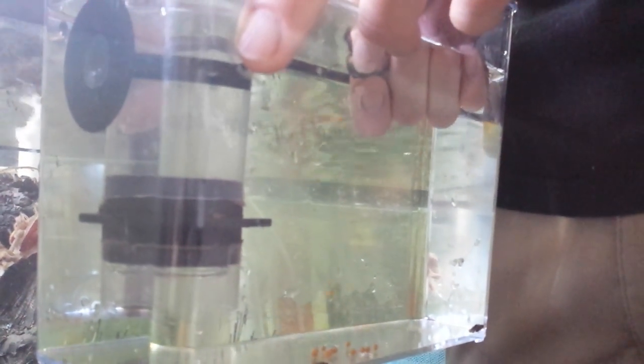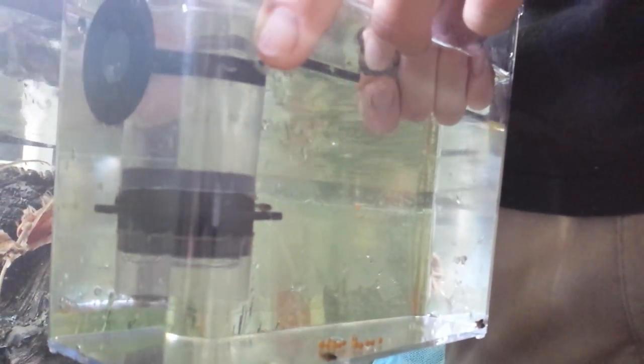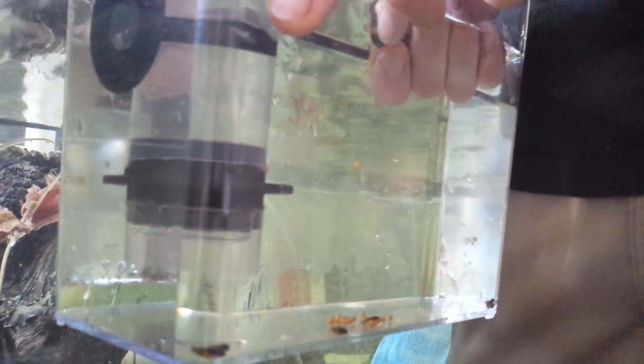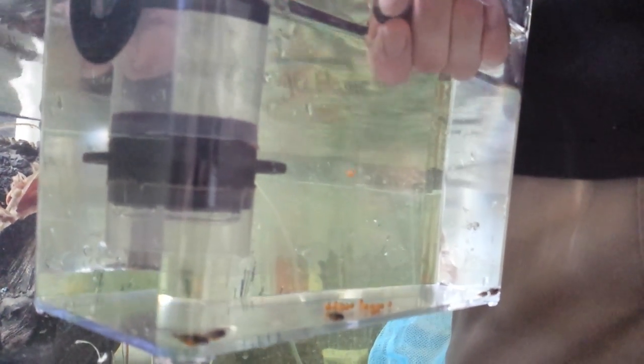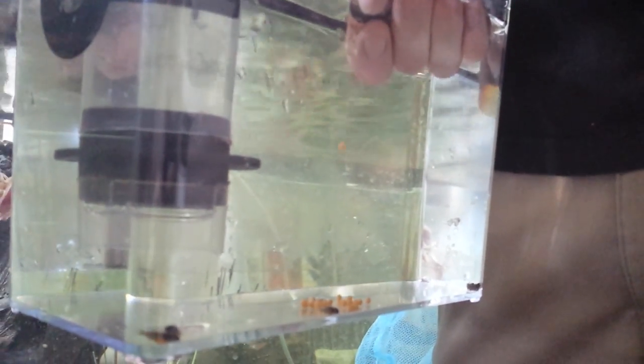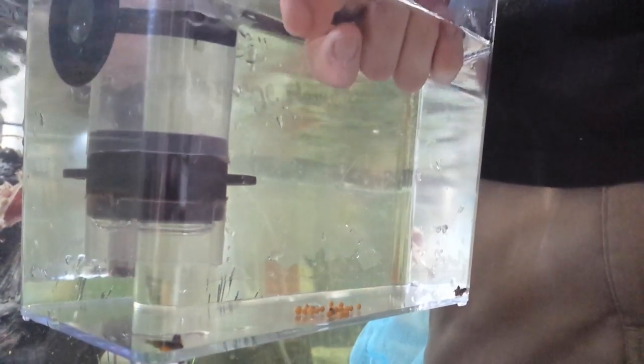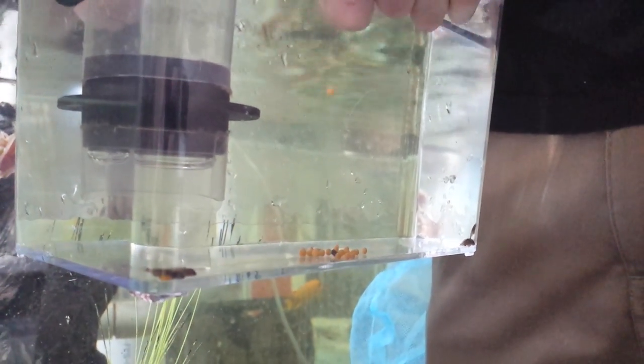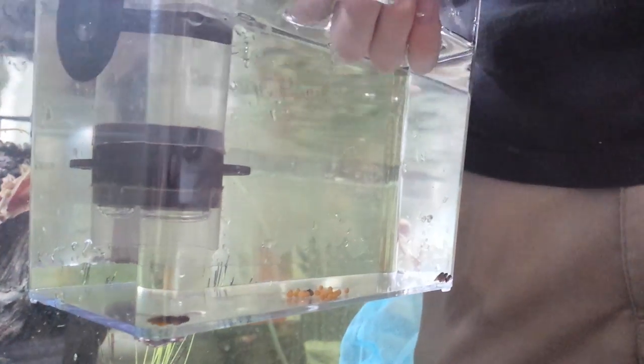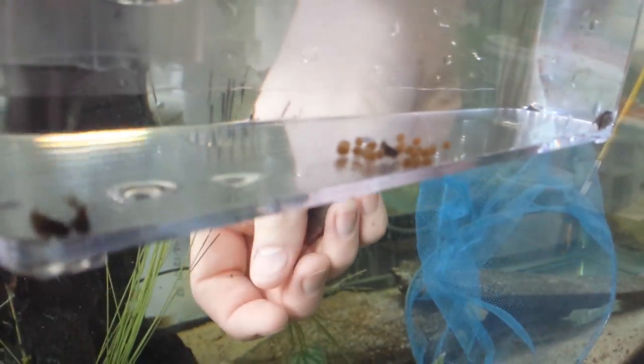There's 1, 2, 3, 4, 5, 6, 7, 8, 9, 10, 11, 12, 13, 14, 15, 16, 17, 18, 19, 20, 21, 22, 23. It looks like about 23 eggs came out of this pretty small female and I'm going to go ahead and release her.